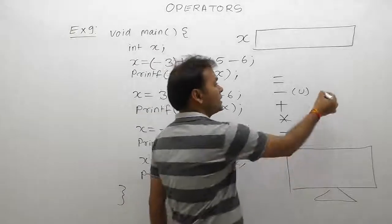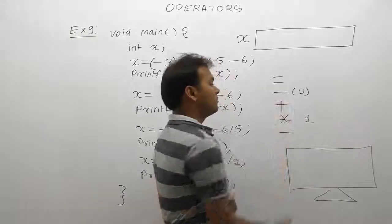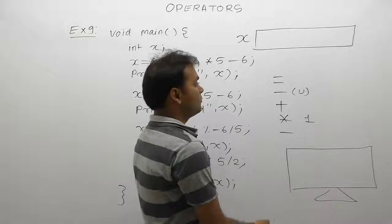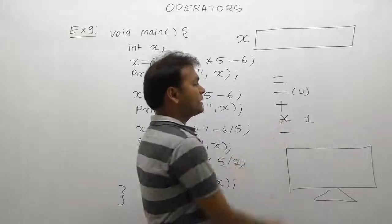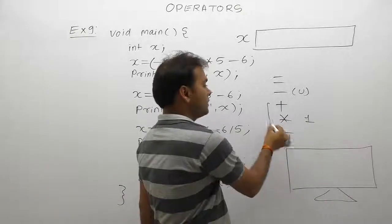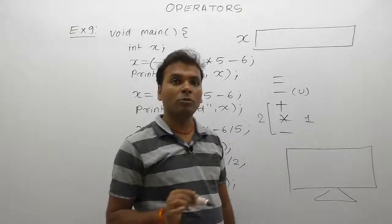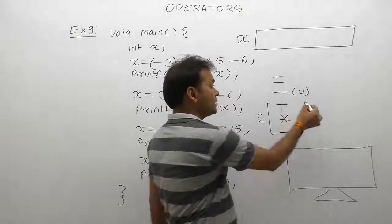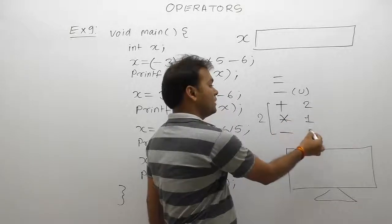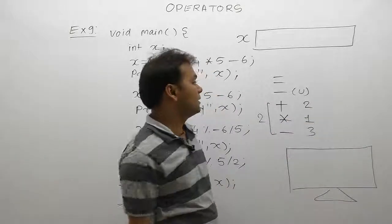The highest priority is unary, after that multiplication. If we talk about plus or minus, both have exactly the same priority. In this case, we follow associativity rules to solve. First chance goes to plus, then third case minus, then finally assignment.